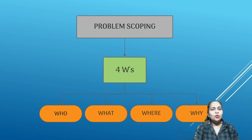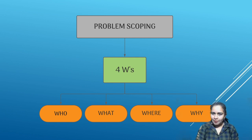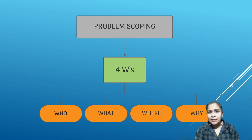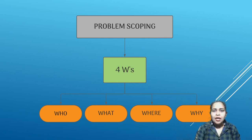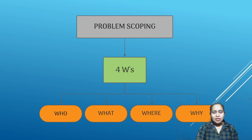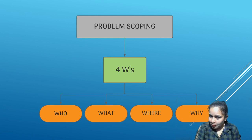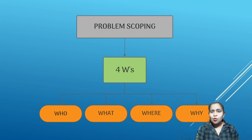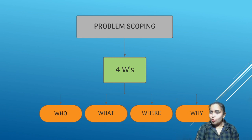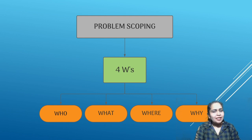'What' means what the actual problem is. By communicating through interviews and questionnaires, you will learn about the actual problem. Then comes 'Where' — where the problem exists, meaning the location of the problem or the situation in which the stakeholder is facing this problem.